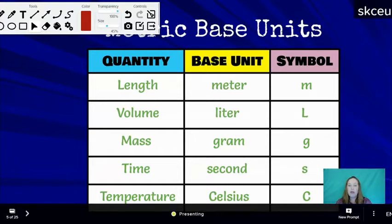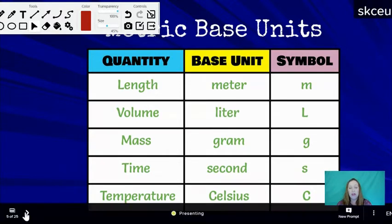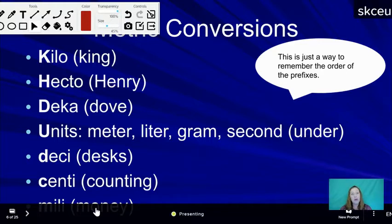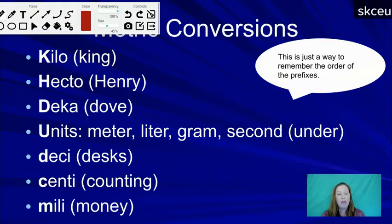The SI base units are: meters for length, liters for volume, grams for mass, seconds for time, and Celsius for temperature. If you've traveled outside the United States, someone will tell you the temperature in Celsius, and speed limits will be given in kilometers per hour. In other countries, you'll encounter these metric base units regularly.